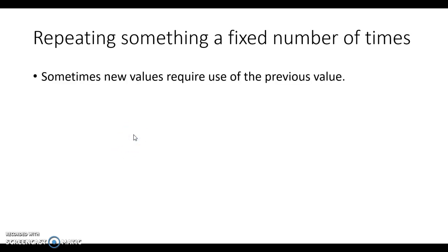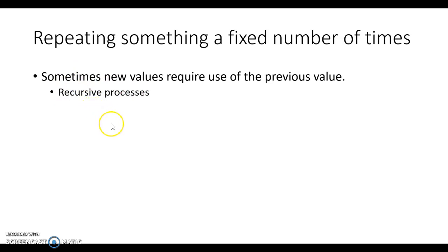One situation where for loops are useful is where a new value, perhaps inside of a vector, depends on the use of a previous value. One common use of this is a recursive process, where the next iteration depends on the previous one.